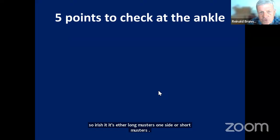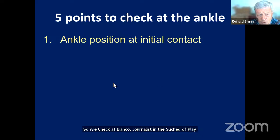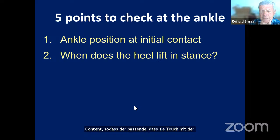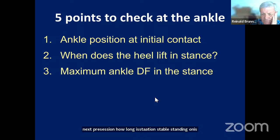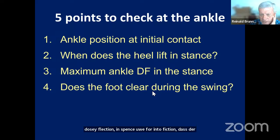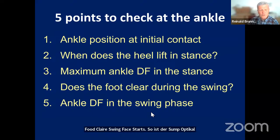At the ankle joint in the sagittal plane, we check: the ankle position at initial contact (heel, foot, or toe contact); when the heel lifts in stance (stability duration); maximum dorsiflexion in stance—critical because without tibial control you cannot control the knee and hip; whether the foot clears during swing phase; and ankle dorsiflexion during swing phase.